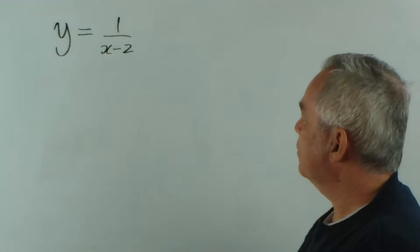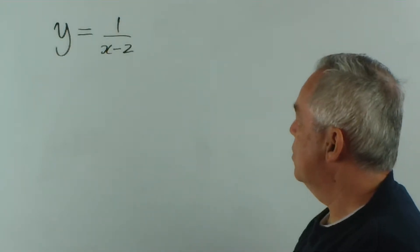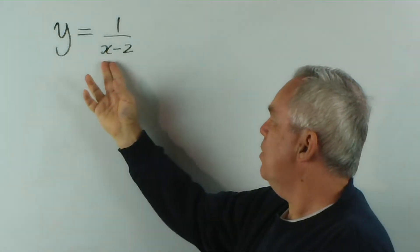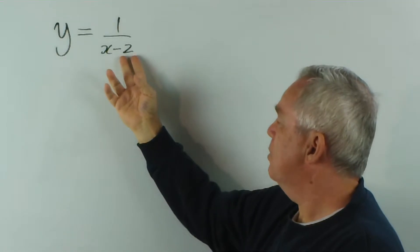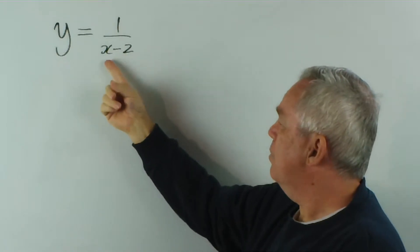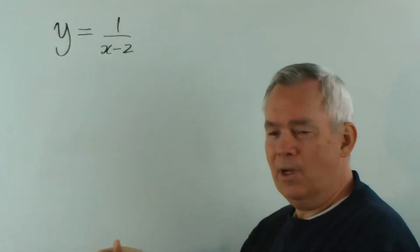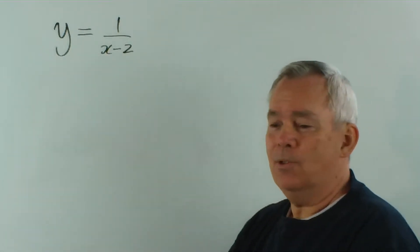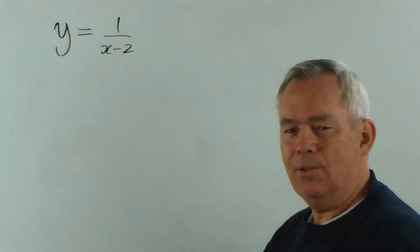What happens if we have an x minus 2 instead of an x? Well, we need to understand this is just a number — x minus 2. If I put an x value of 1, 2, 3, 4 or 5, and I subtract 2 from each of those, I still end up with a number: minus 1, 0, 1, 2, 3, or whatever.